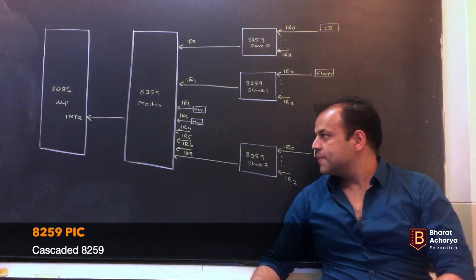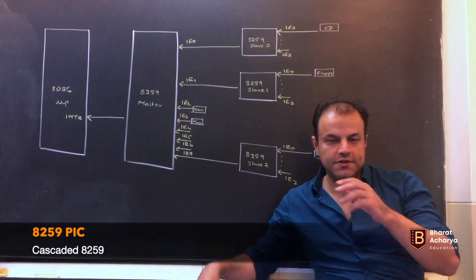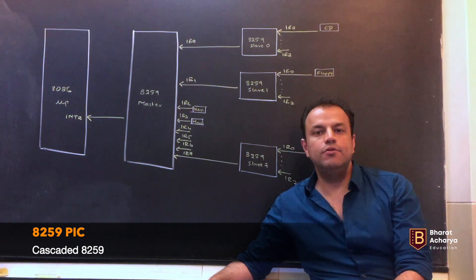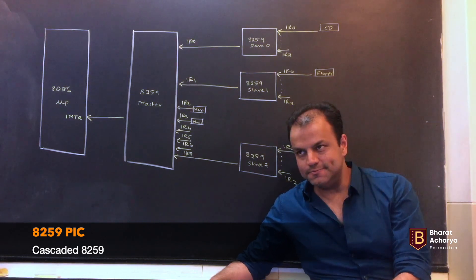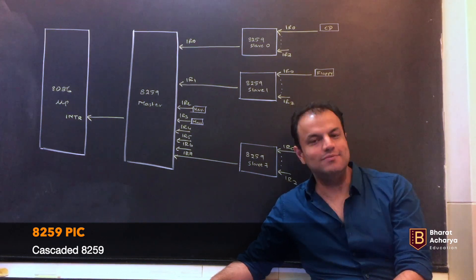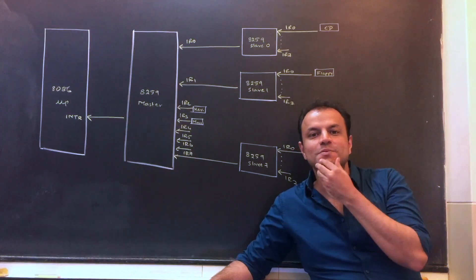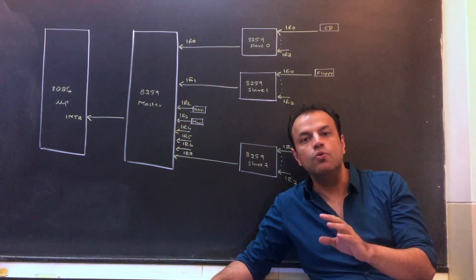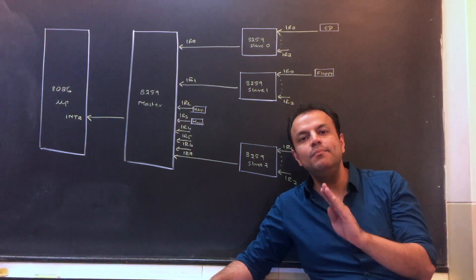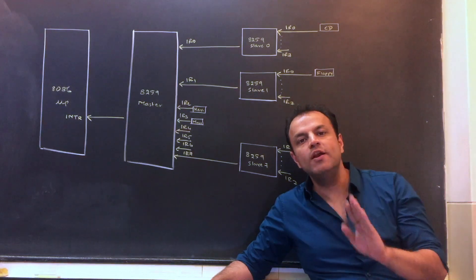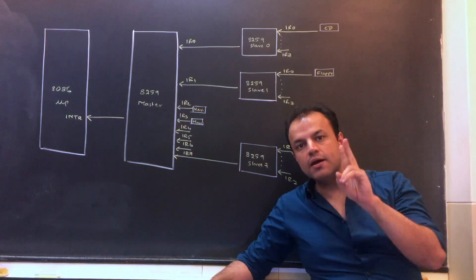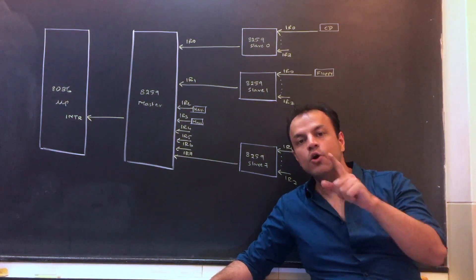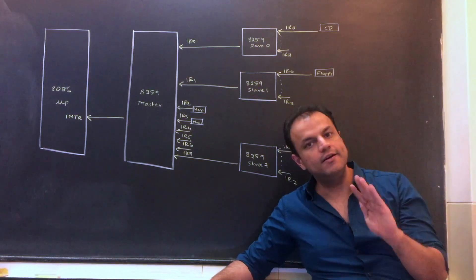Let's look at cascading. First thing - what do you mean by cascaded 8259? How many 8259s are there? That's the first misconception. People think cascading means there have to be 9 8259s. No, cascading means more than one 8259. One master and one slave is also cascaded. One master and eight slaves is also cascaded.